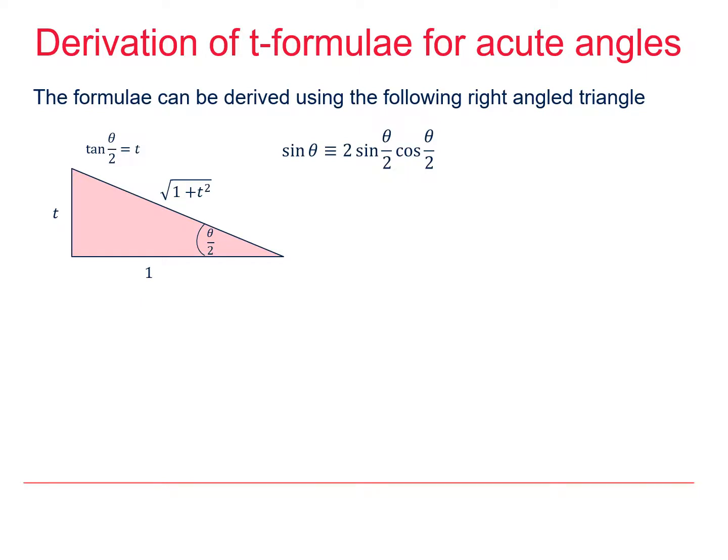For acute angles, I can use a triangle to work out the t-formulae for sin θ, cos θ, and so on. What I've got here is an acute angle triangle with θ/2 as my acute angle. And I know that tan(θ/2) should be equal to t. So to make sure that tan(θ/2) is t, I've set the opposite to t and the adjacent to 1.